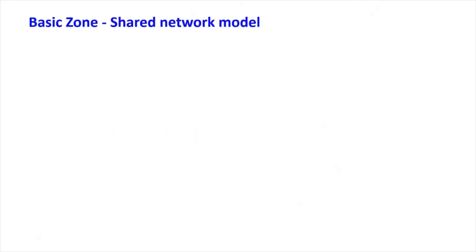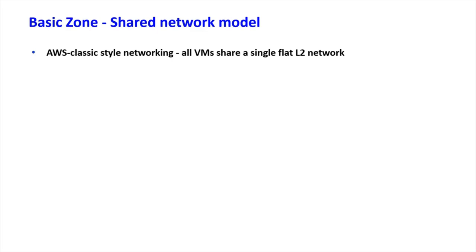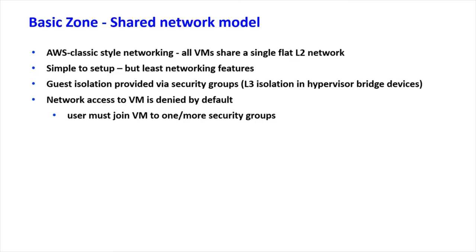How it all began with CloudStack: initially there was a so-called basic zone, which is basically just one huge shared network. This is similar to Amazon's classical-style networking — you have a single flat layer-2 network, and you use security groups to isolate different tenants, effectively providing a firewall at the hypervisor level so different tenants cannot reach each other unless security groups specifically allow it.